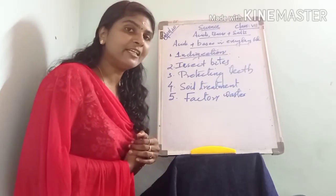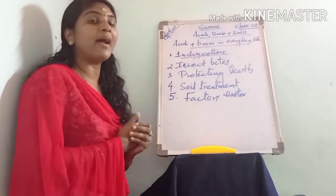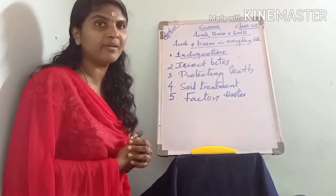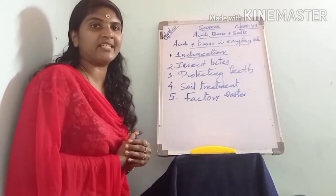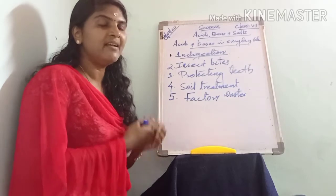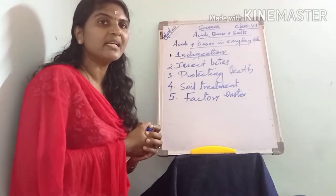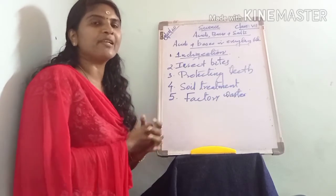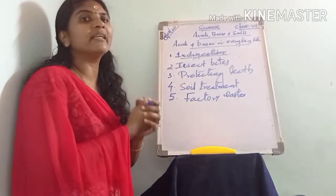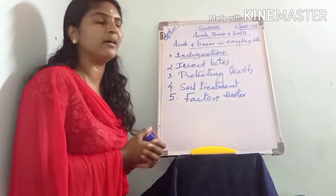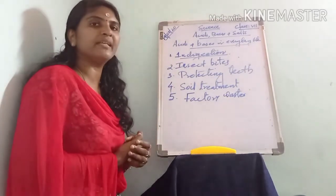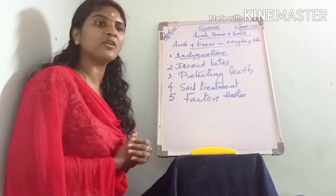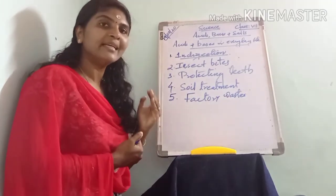So, what have we learned today? We learned how acids and bases are related to our everyday life. We also learned about the neutralization reaction — when an acid reacts with a base, we get salt and water, and this process is called the neutralization reaction. We also learned the important applications of neutralization. That is the end of today's class, and we have also finished this chapter. Thank you, children.